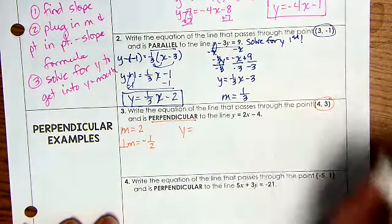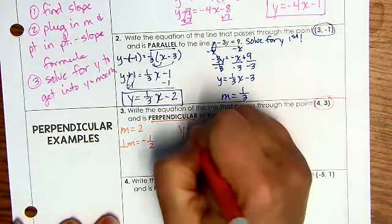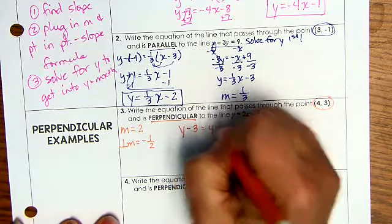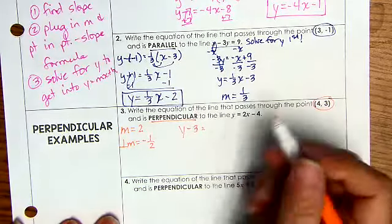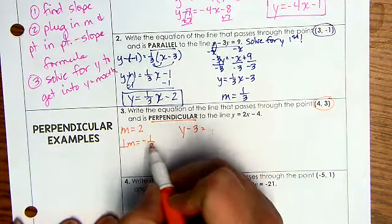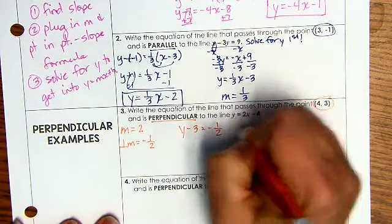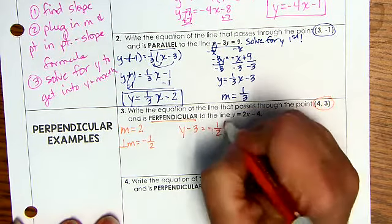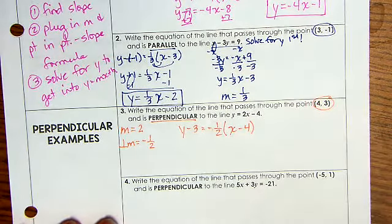So now I plug into the formula. We have y, not y equals, y minus 3 equals 4. No, not 4. This wasn't Russian. My new perpendicular slope, we plug in the new perpendicular slope here, minus 1 half, not minus, negative, open parentheses, x minus 4.